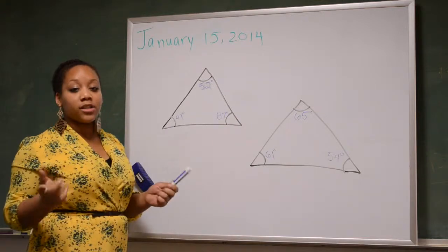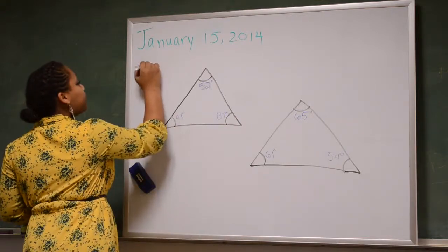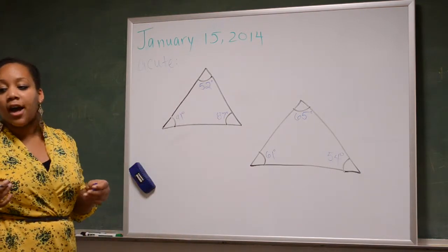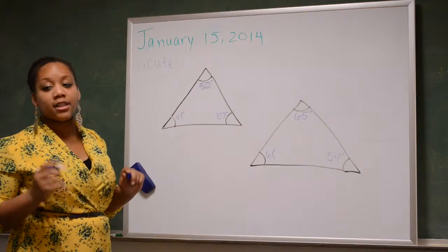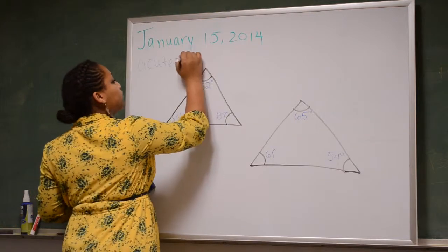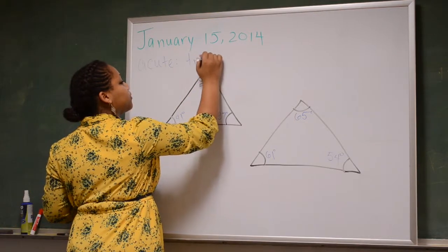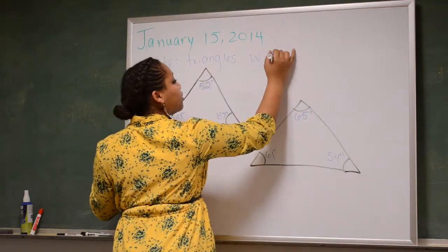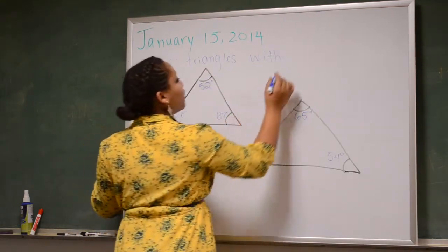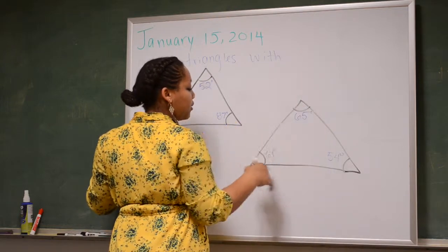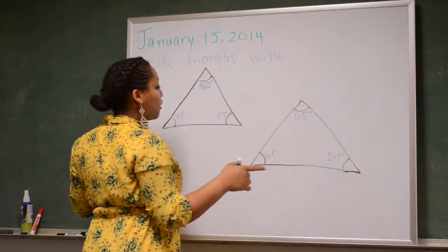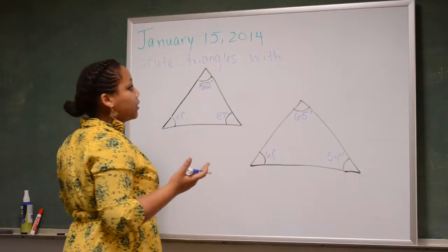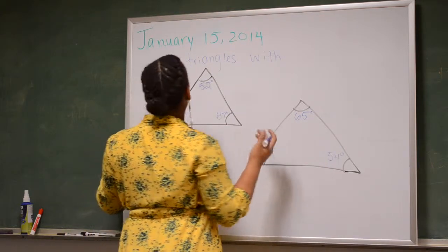So, examples of one type of triangle would be acute triangles. Acute triangles are triangles that have angles that are less than 90 degrees. So, all of these triangles have angles like 61, 65, and 54. And even the 87 degrees, since it's less than 90 degrees, it's still an acute triangle.